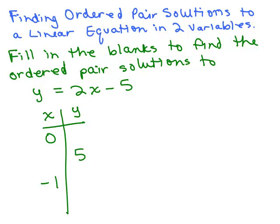How about if we were asked to fill in the blanks to find the ordered pair solutions to y equals 2x minus 5. So we're trying to find three ordered pairs. I could see the x value in two of the ordered pairs and the y value in one. So we need to do three things. We need to find each ordered pair. Let's work on the first one.